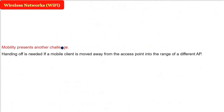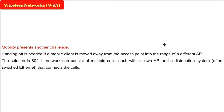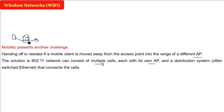Another challenge in Wi-Fi is mobility. When a mobile client — a phone or laptop — moves away from an access point, it must hand off to the next access point. For example, if you move to an area in your house with no signal, you can use a range extender or booster. The solution is that 802.11 networks can have multiple cells with multiple access points.